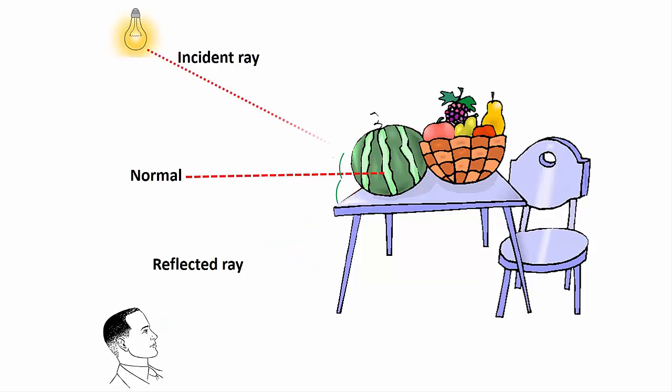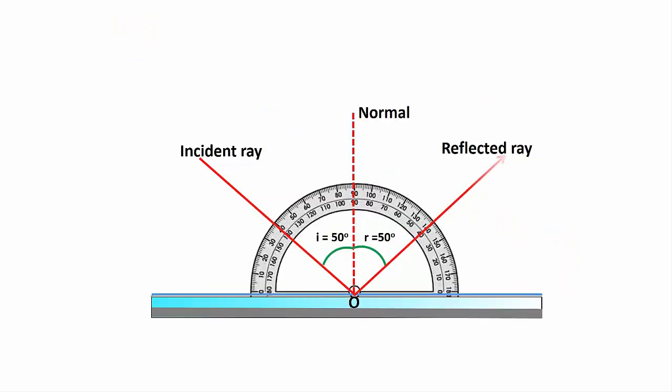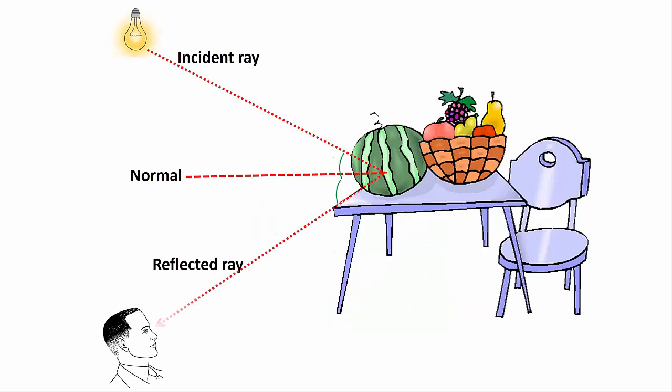Light falling on the surface will be reflected in such a way that the angle of incidence is equal to the angle of reflection. Do this experiment in your lab and prove the law of reflection for various angles of incidence.